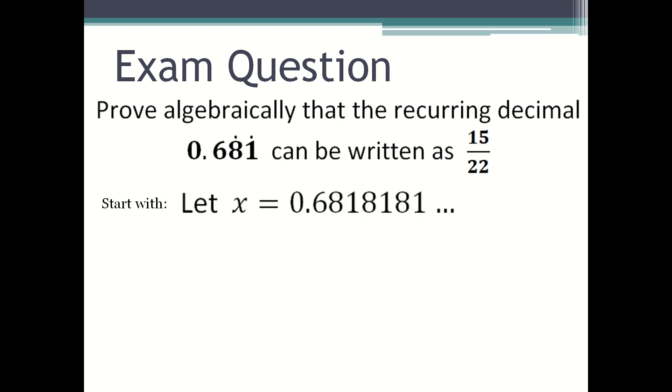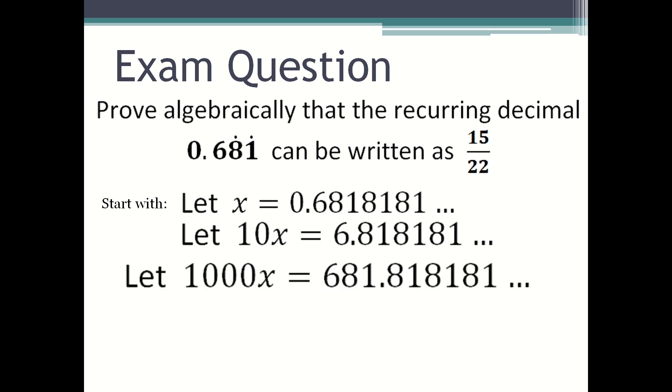You have to start with let x equal 0.681818..., let 10x equal 6.818181..., then let 1000x equal 681.818181.... You rearrange it so the bigger x is on top, and in this case we're going to use 10x and 1000x as the decimal numbers match.